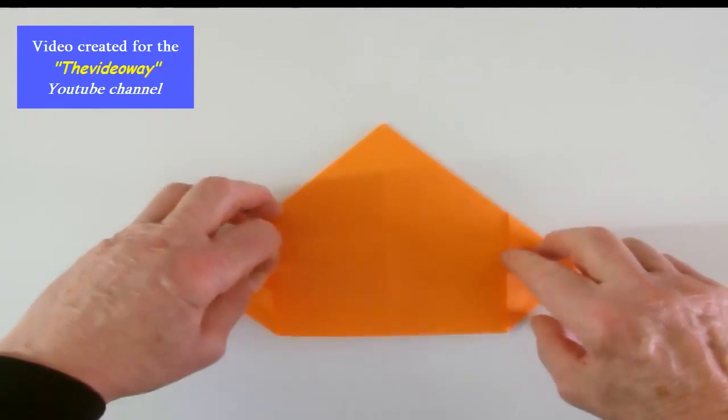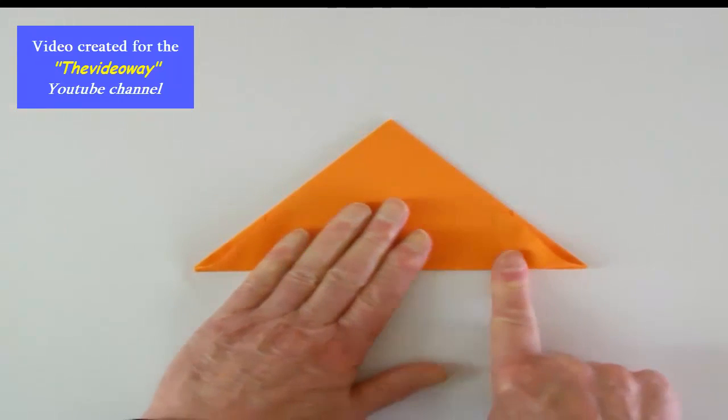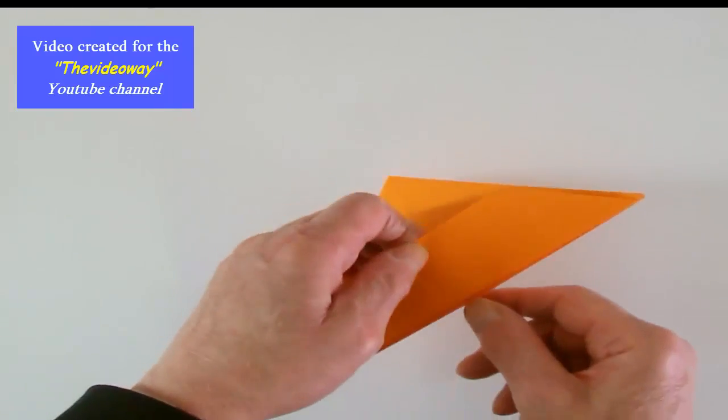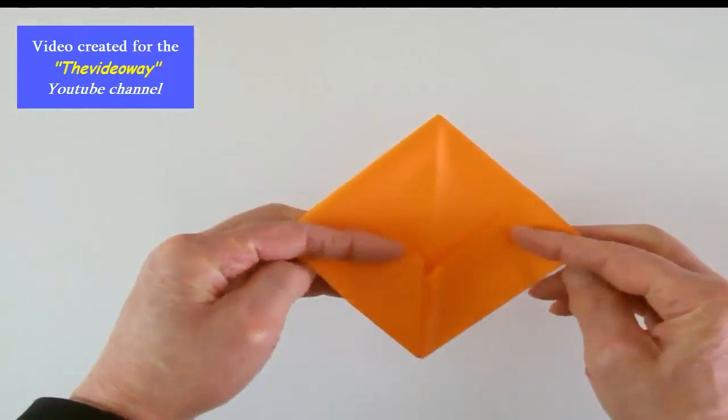Now fold up this flap. Now lift up and open out the pocket and the top should just fall down on itself. So now we get a diamond shape.